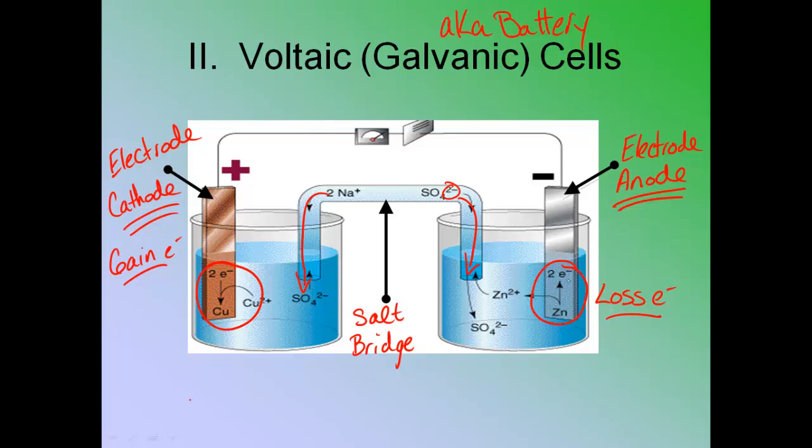And then as you can see it, these electrons are coming up through our wire. So our electrons are passing in this direction. Remember E minus is the symbol for electrons.